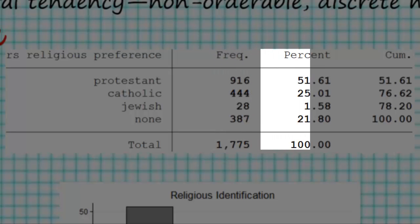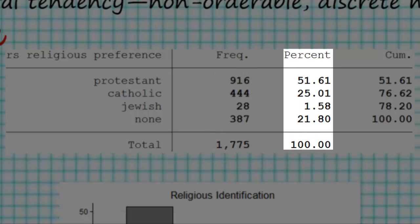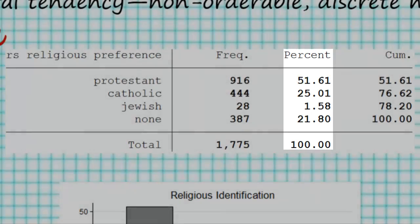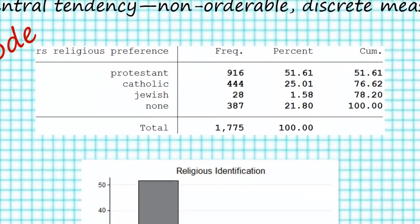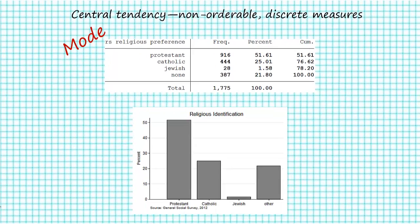Finally, my preferred method is to look at the percentage column — I just find this a little bit easier — and take the number that is the highest value. In this case, 51.61%, and look across and read the modal category: Protestant. So those three methods allow you to pick the category that is most frequently occurring.